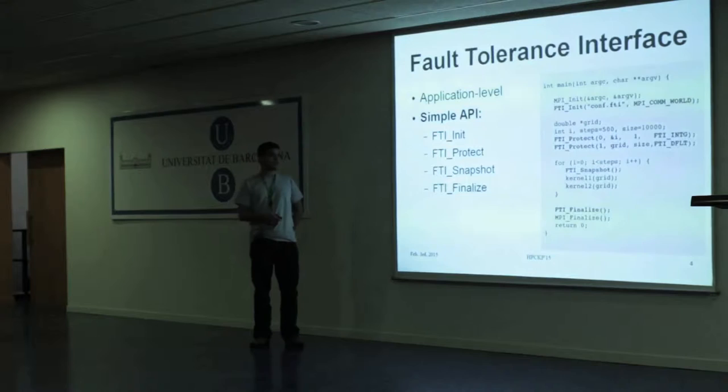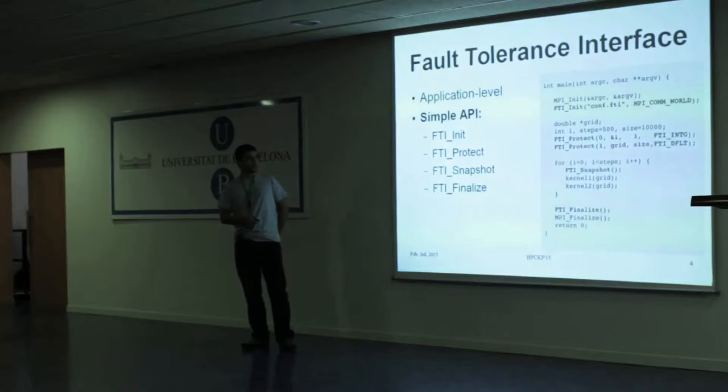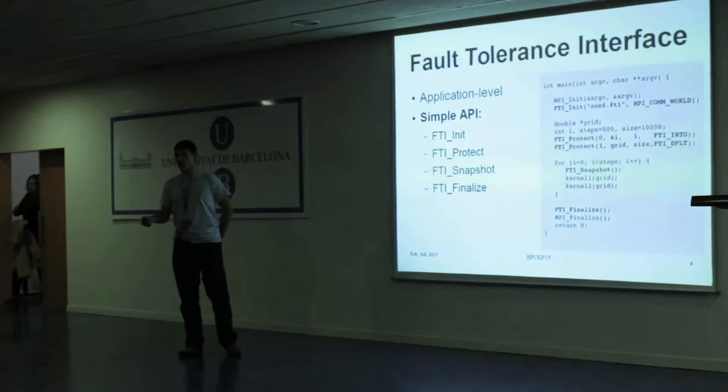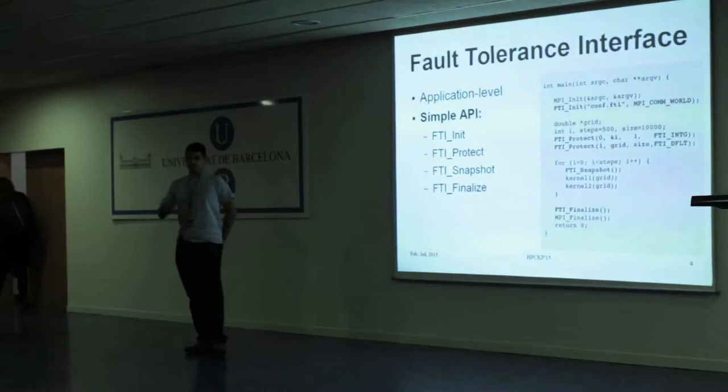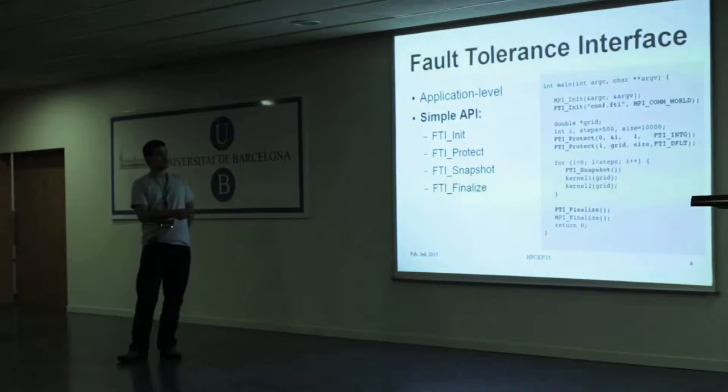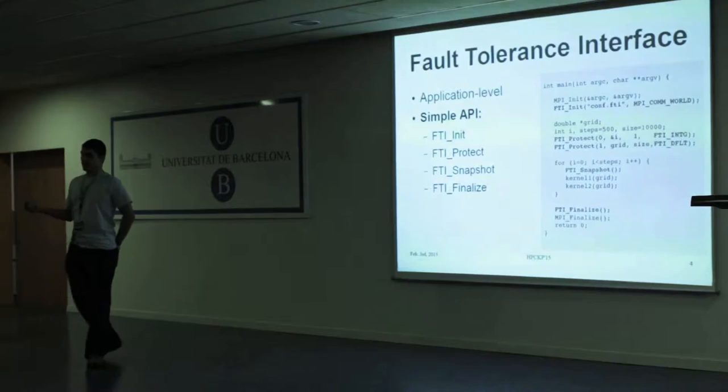In your main loop you just call FTI_Snapshot. What happens is that FTI is not doing a checkpoint at every iteration. There are some timers inside FTI, and in your configuration file you say which frequency you want to checkpoint for each one of the levels.